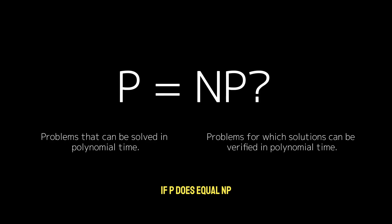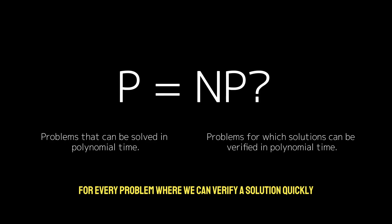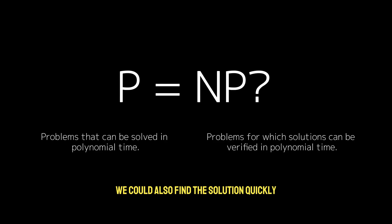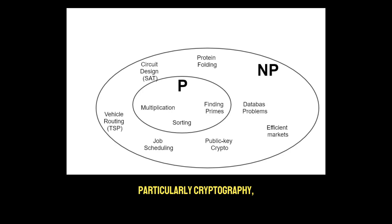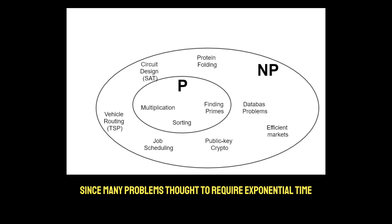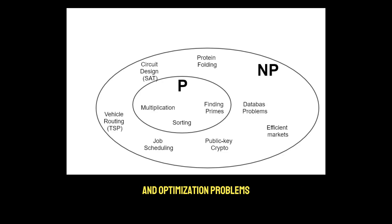If P does equal NP, it would imply that for every problem where we can verify a solution quickly, we could also find the solution quickly. This would fundamentally alter many areas of computational theory, particularly cryptography, algorithm design, and complexity theory, since many problems thought to require exponential time — like certain encryption schemes and optimization problems — could potentially be solved in polynomial time.